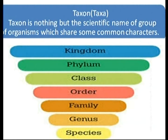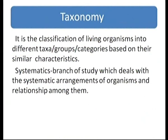Now let us discuss a new term: taxon (plural: taxa). A taxon is the scientific name of a group of organisms that share some common characters. There are seven levels of taxa, from species up to kingdom. Taxonomy is the classification of living organisms into different taxa based on their similar characteristics. Systematics is a branch of study that deals with the systematic arrangement of organisms and the relationships among them — there is a slight difference between taxonomy and systematics.